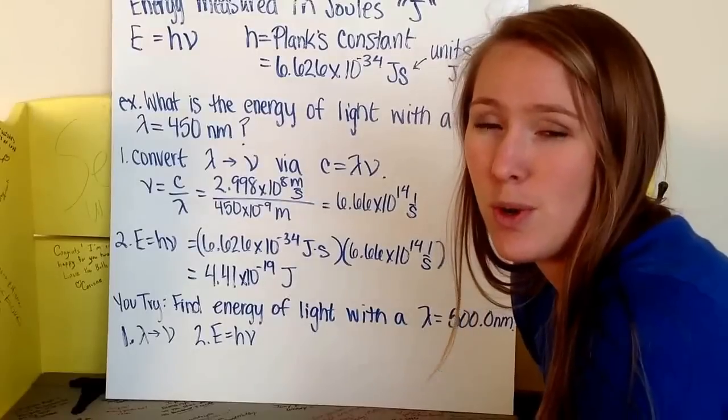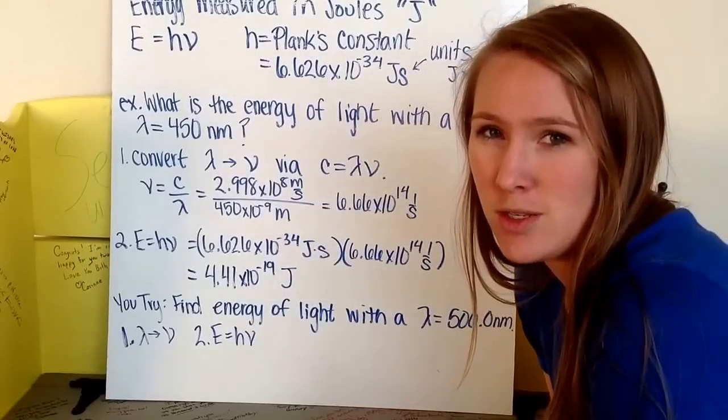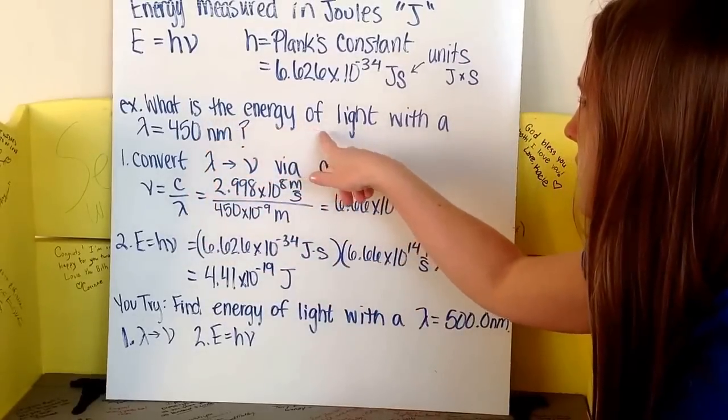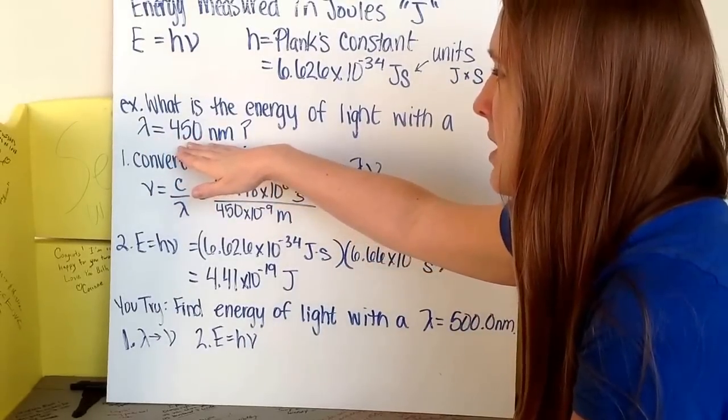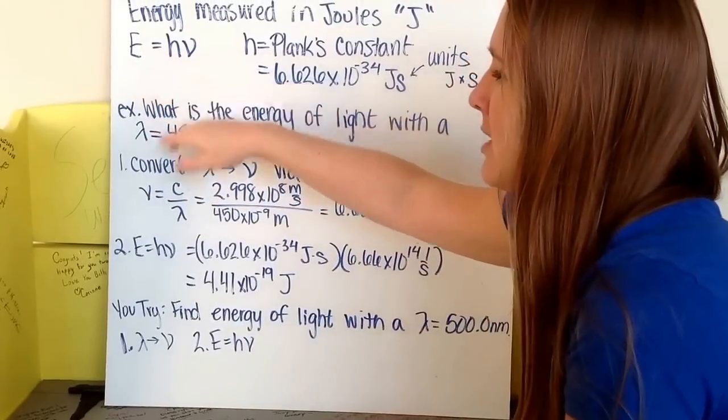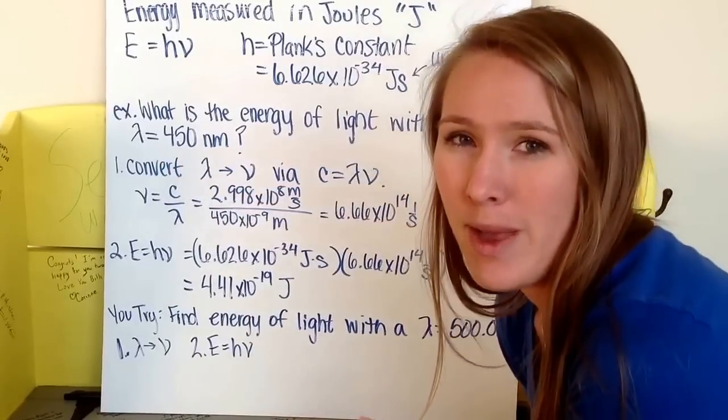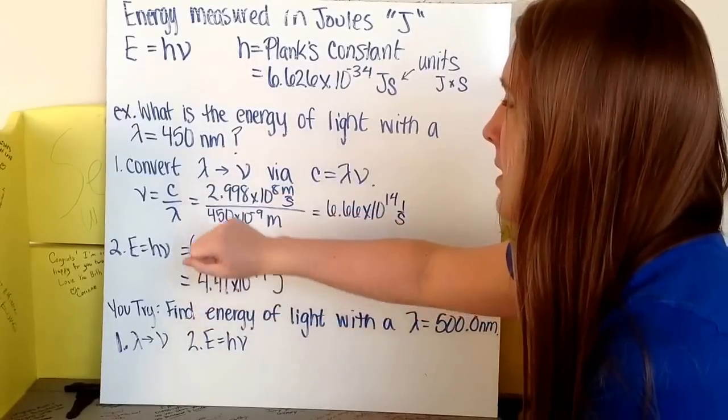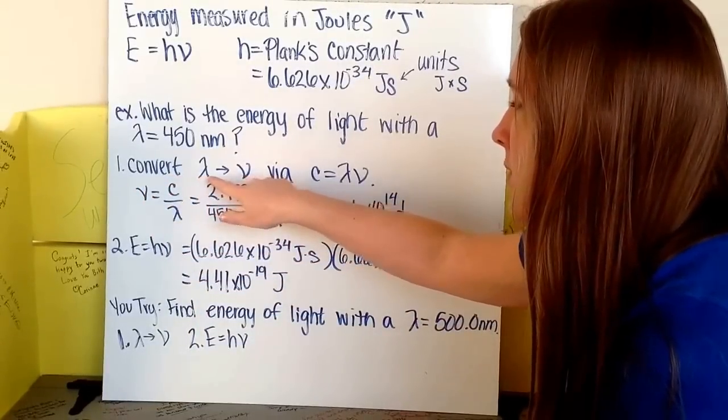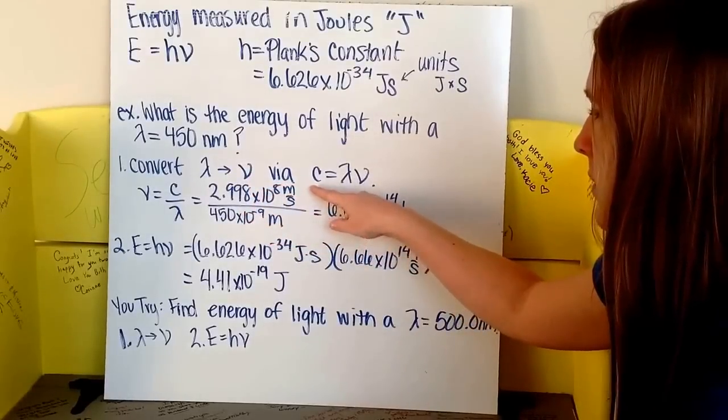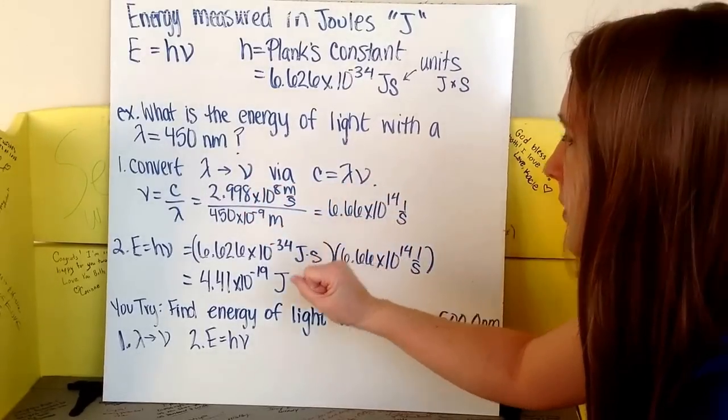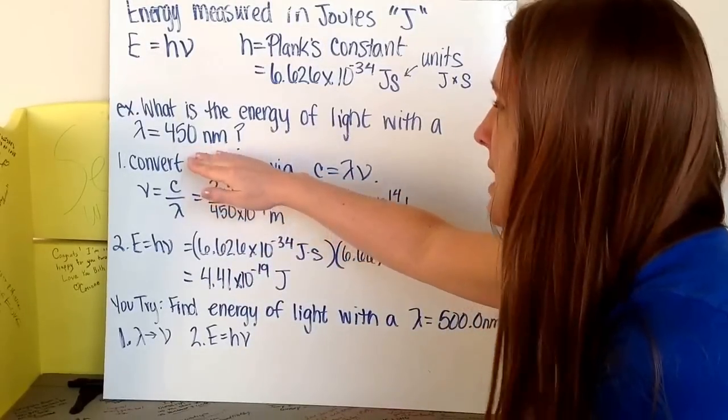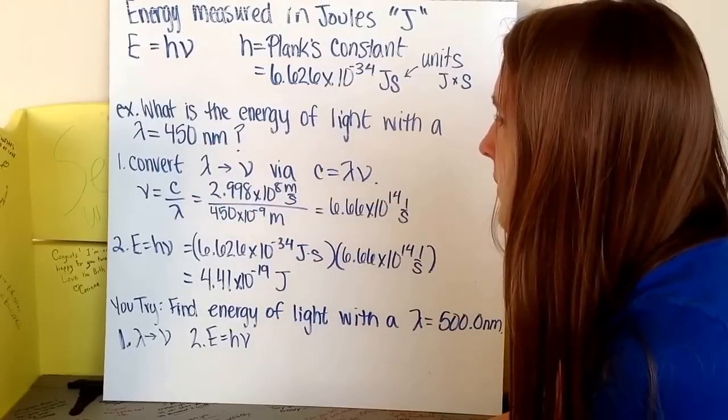We can now do problems where we're looking for the energy associated with a particular wavelength of light. An example question is, what is the energy of light with a wavelength of 450 nanometers? Our equation for energy cannot solve directly from wavelength. We have to go back to our equation for the speed of light, where we can solve for our frequency from our wavelength. First we convert our wavelength to frequency via our speed of light equation, C equals lambda times nu. 450 nanometers is 450 times 10 to the negative 9th meters.